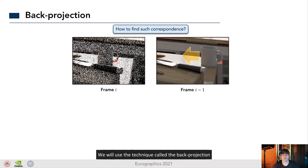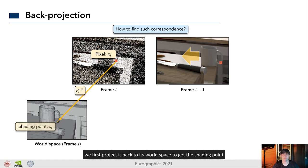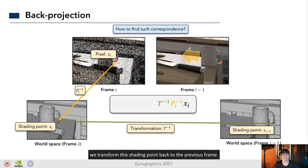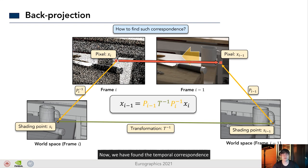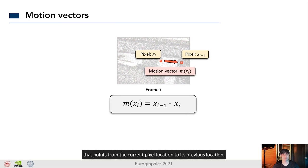Now, the question is how to find such correspondence. We will use a technique called the back projection. When two consecutive frames are given, for each pixel in current frame, we first project it back to its world space to get the shading point. Then, according to the movement of the geometry, we transform this shading point back to its previous frame. Finally, we project the transformed shading point back to the image space to get the corresponding pixel. Now, we have found the temporal correspondence. And the red arrow here is called the motion vector. It is the 2D vector in an image space that points from the current pixel location to its previous location.